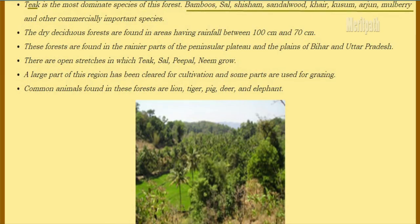Trees found in moist deciduous forests are Teak, Bamboo, Sal, Shisham, Sandalwood, Khair, Kusum, Arjun and Mulberry. Dry deciduous forests are found in areas where rainfall is between 70 and 100 cm, in rainier parts of the peninsular plateau and in the plains of Bihar and Uttar Pradesh. They are open stretches in which Teak, Sal, Peepal and Neem grow. A large part of this region has been cleared for cultivation and grazing purposes.